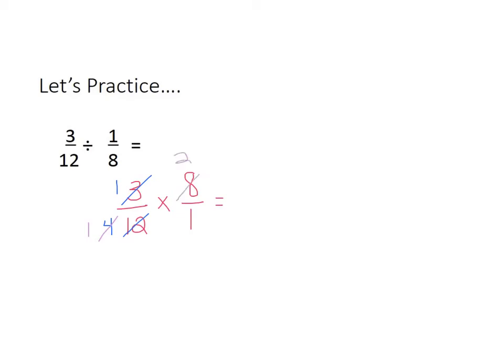So our final answer, multiply across 1 times 2 is 2, and 1 times 1 is 1, and then if you reduce that down, you'll get 2. So our final quotient is 2.